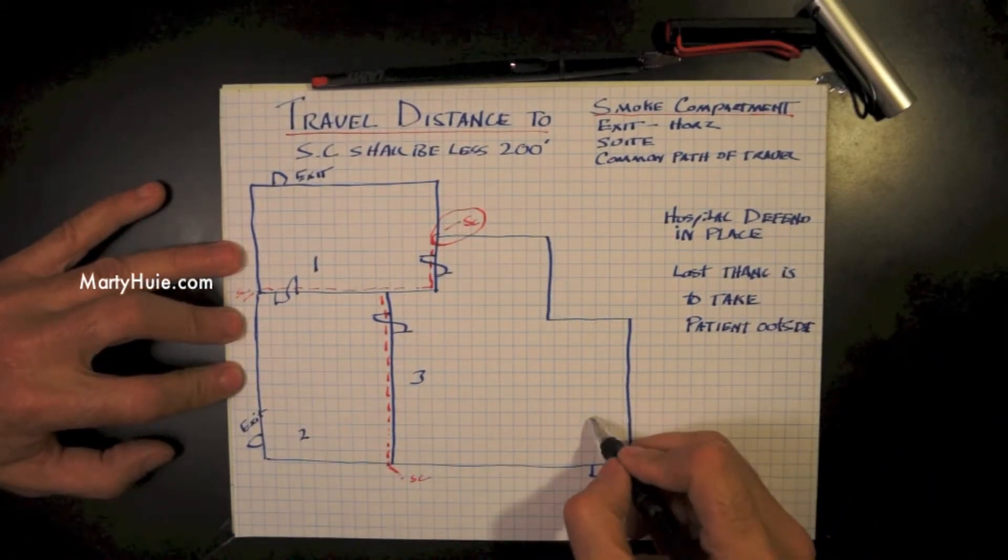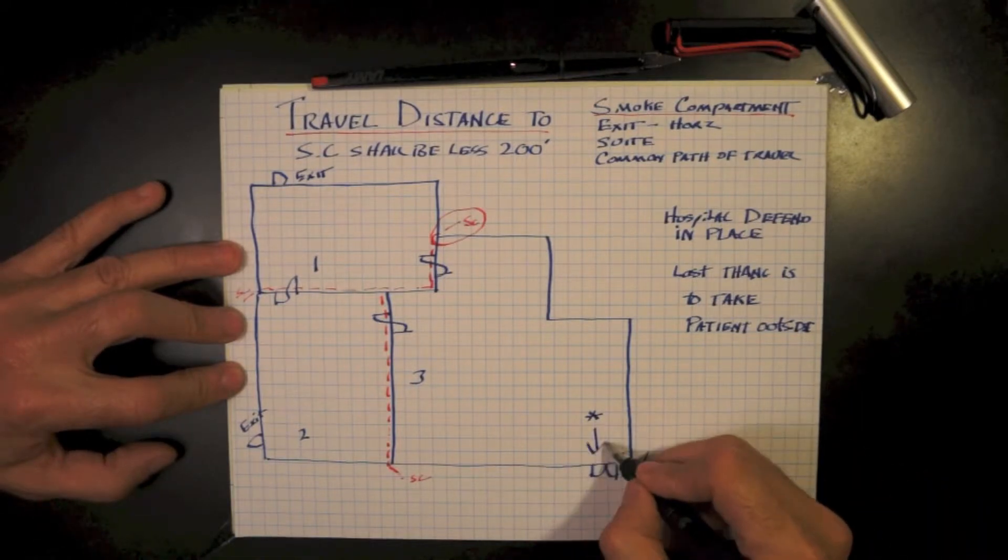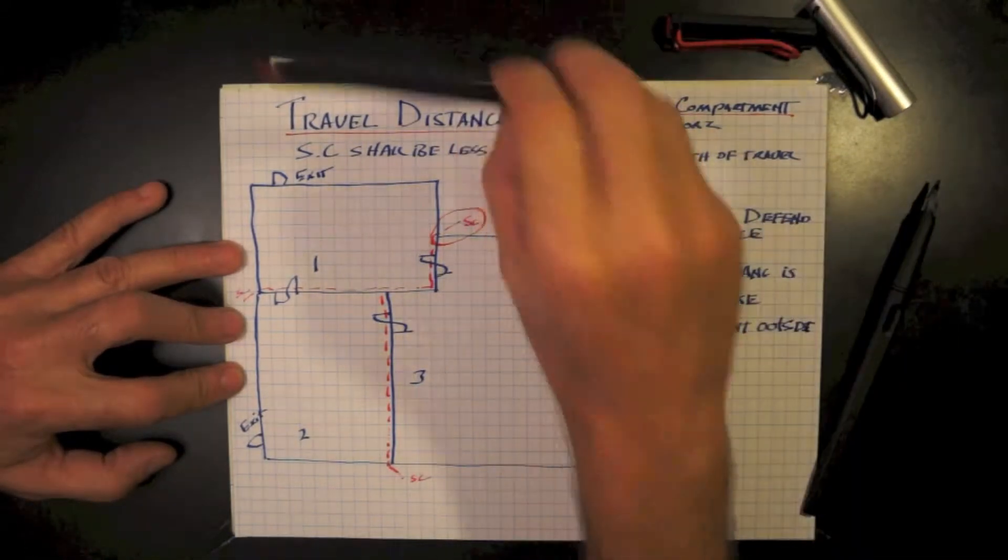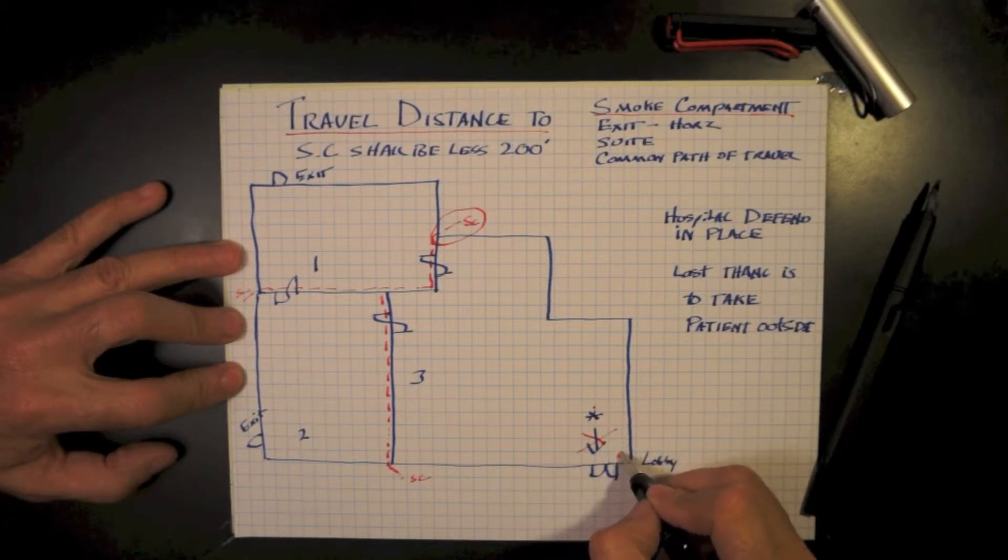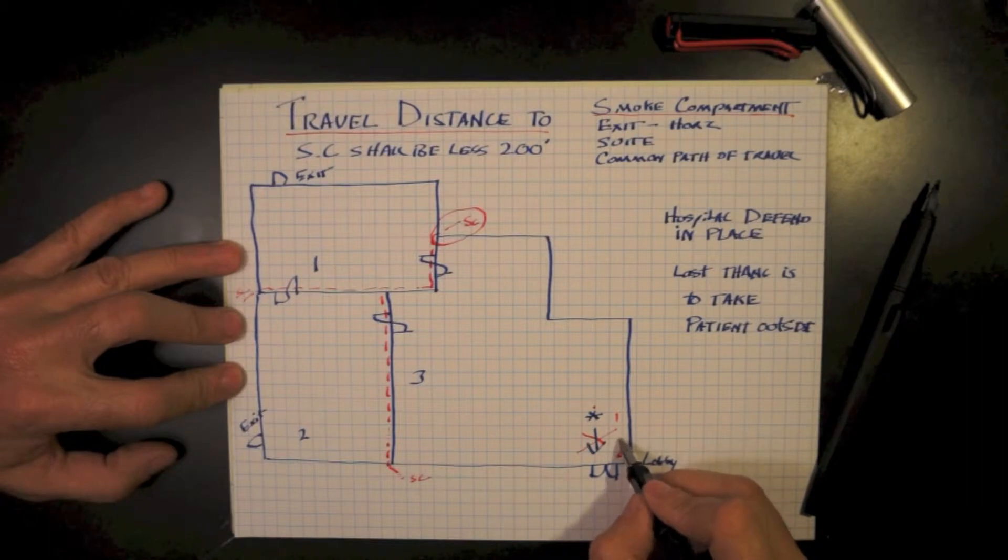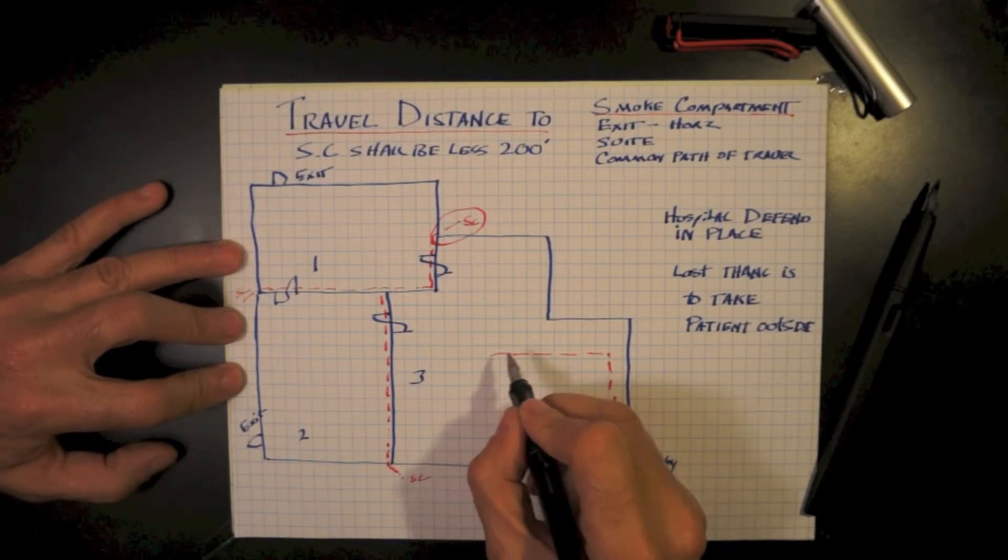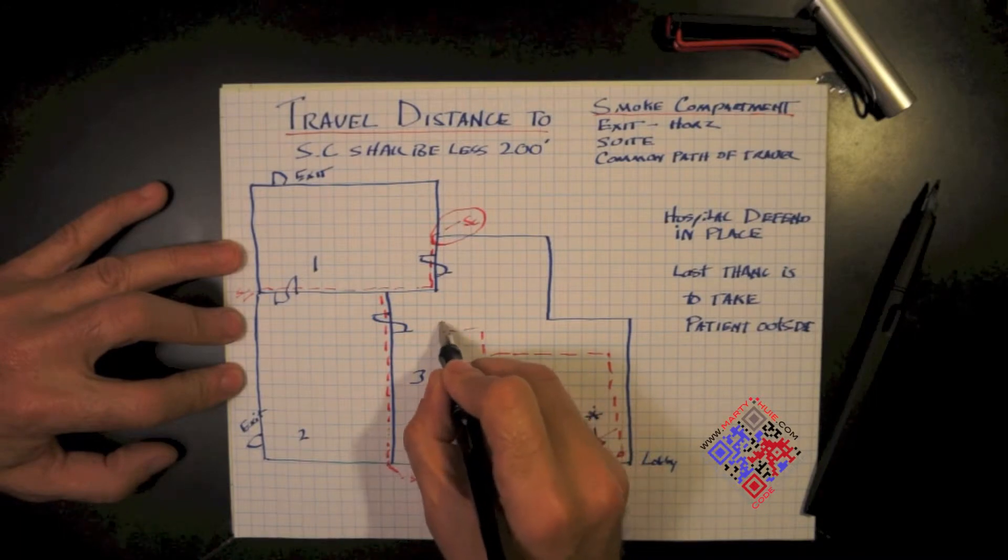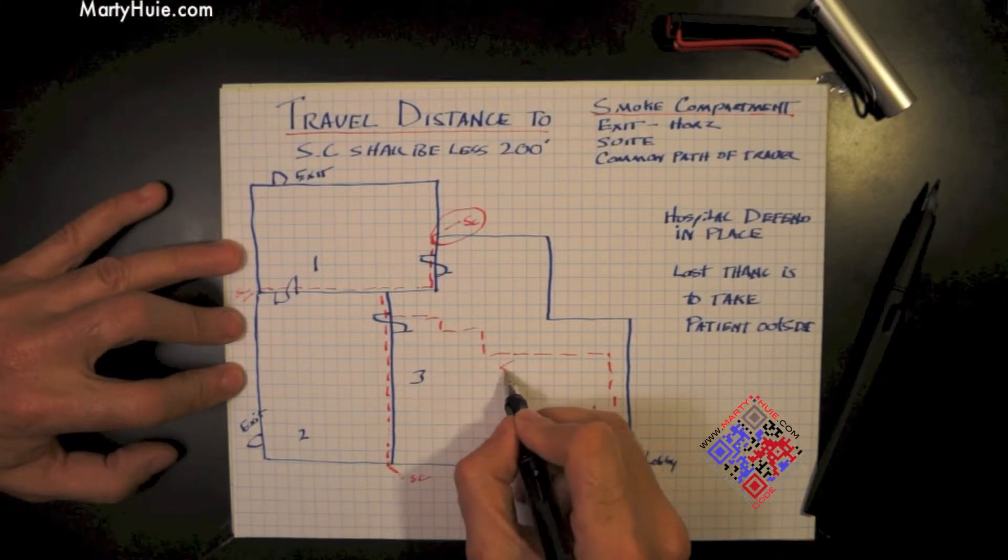So if we should have an event and we have a person located here and we need to move them, we do not want to take them outside. What the code requires, even if it's the lobby, we have the capability of taking a patient to the nearest smoke compartment wall, and that travel distance traversing through the corridor system of the hospital shall be less than 200 feet.